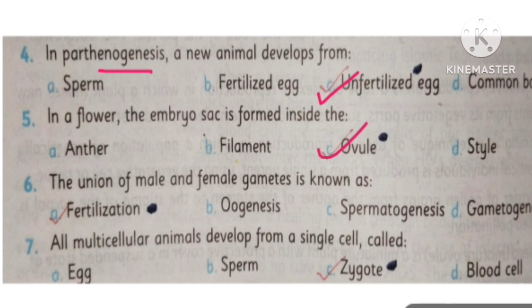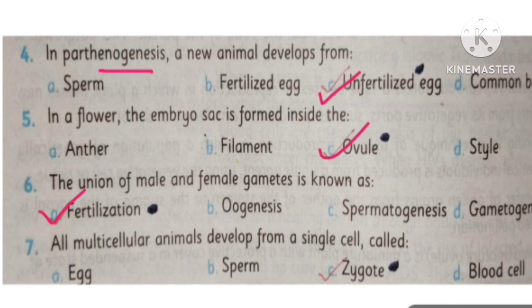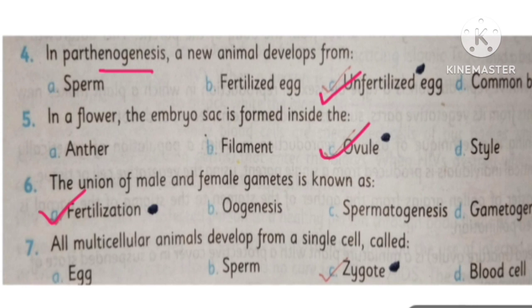MCQ number 6: The union of male and female gametes is known as fertilization. MCQ number 7: All multicellular animals develop from a single cell called a zygote.